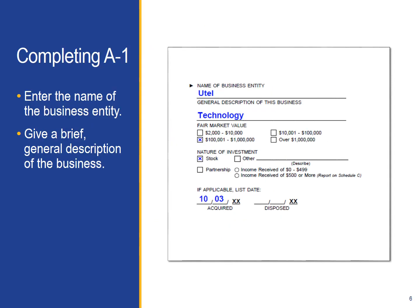Once you know which assets to report, you can move on to completing Schedule A-1. In the first field, enter the name of the company in which you've invested. Please write out the entire name of the business entity. You may not use acronyms unless it is something common such as AT&T. Also, you should not write the name of the investment company that manages the investment. You must report the individually held reportable stock. The general description of the business need not be long; a few words will suffice.